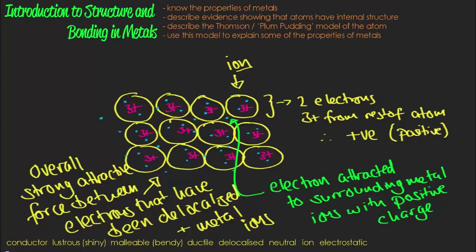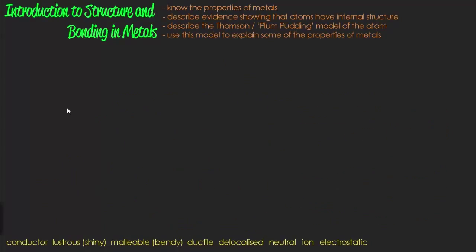So are there any particles repelling one another here? Well, yes of course, because there are these metal ions which all have a positive charge, and they must be repelling one another. The electrons themselves will also be repelling one another. We don't often see metal spontaneously exploding, so the overall attractive force between the delocalised electrons and the metal ions must outweigh the repulsive forces between the metal ions themselves and between the delocalised electrons. Overall, there is this strong attractive force.